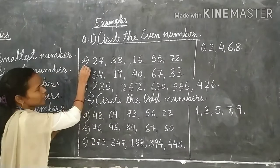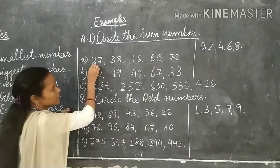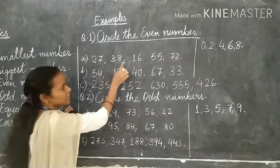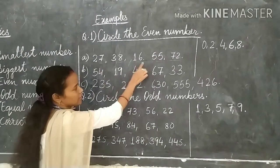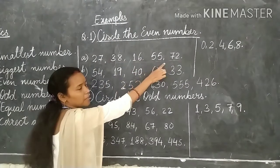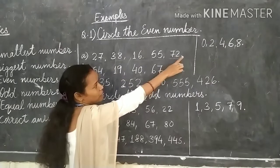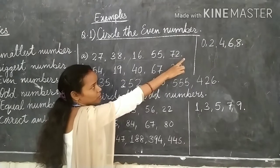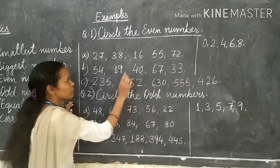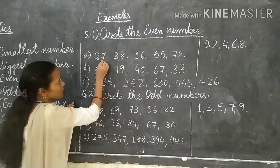For example, question number A: 27, 38, 16, 55 and 72. We have to focus on 0, 2, 4, 6, 8 in the ones place. The ones digits are 7, 8, 6, 5, 2.